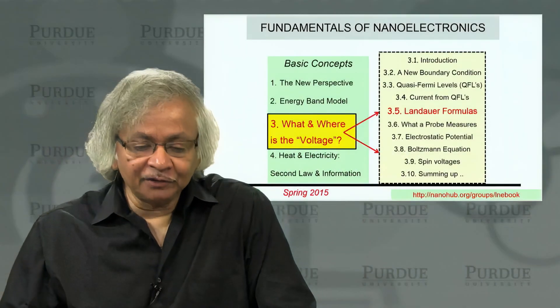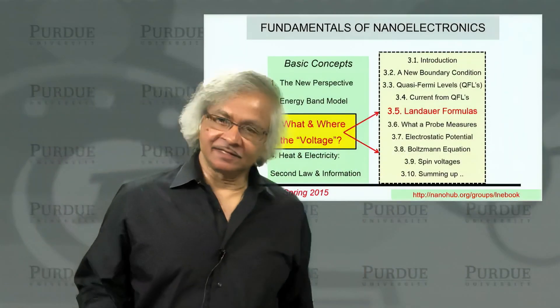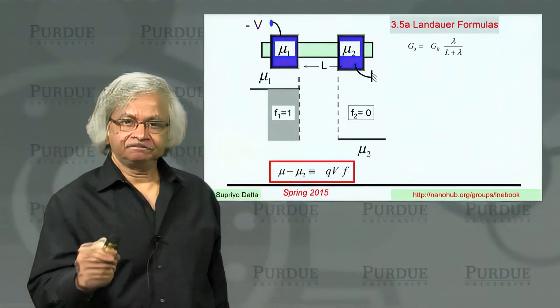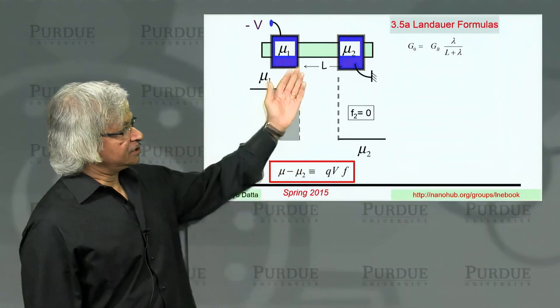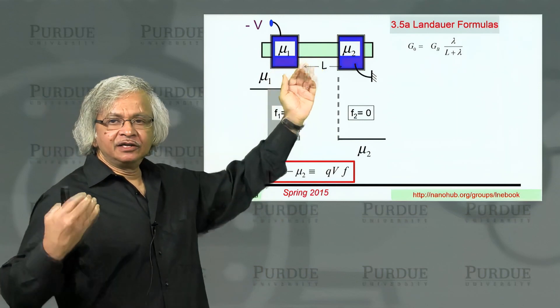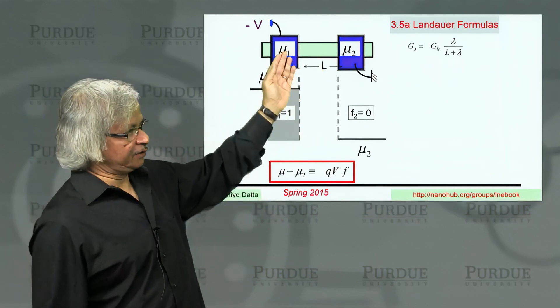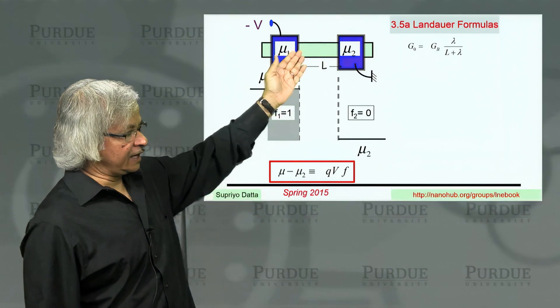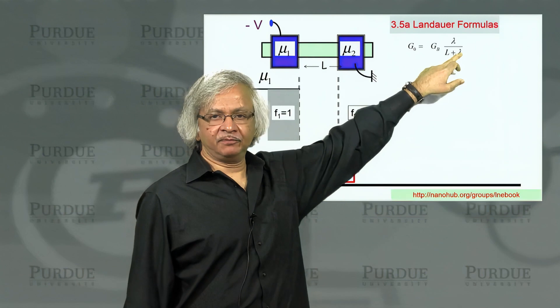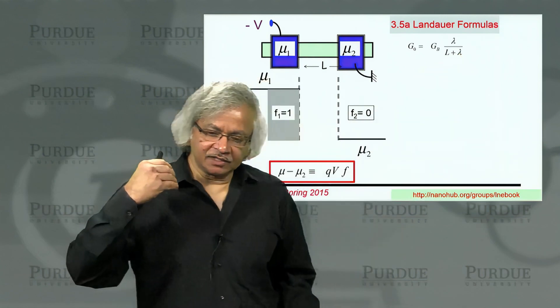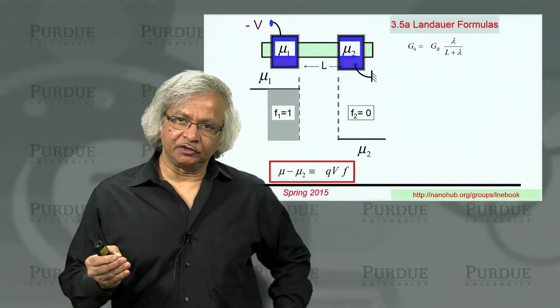Welcome back to unit 3 of our course, this is the fifth lecture. So far we have been talking about channels which have distributed scattering processes, and that scattering process is described by something we call the mean free path - that is, how far does an electron go before it is turned around?